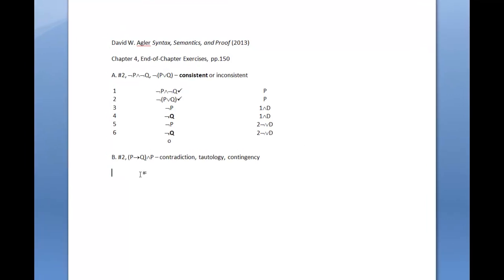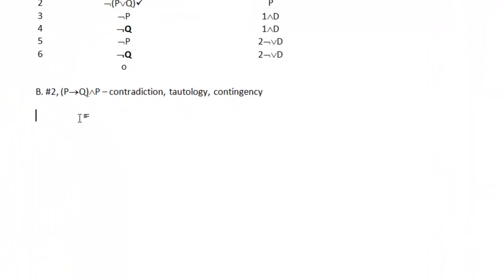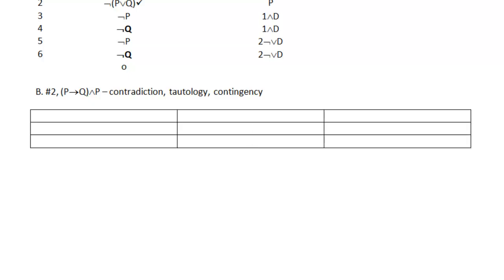Next, let's look at the proposition: if P then Q, and P. In this case we're testing to see whether or not it is a contradiction, tautology, or contingency. There are really only two ways to set up the tree: a test for tautology and a test for contradiction. If both tests fail, then you can conclude it's a contingency. So if you want to use the truth tree method to say a proposition is a contingency, you'll have to test for both contradiction and tautology. Let's start by testing this proposition to see if it's a contradiction.